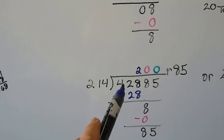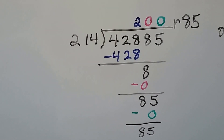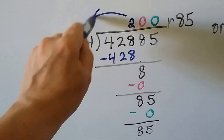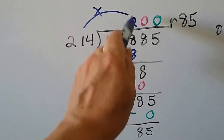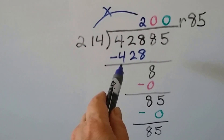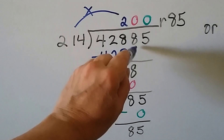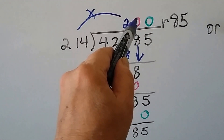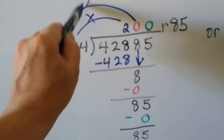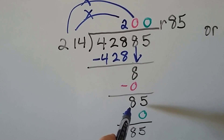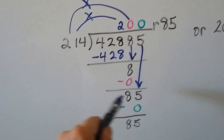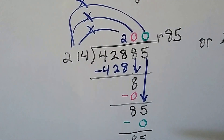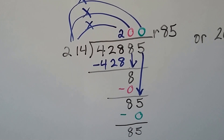Now instead of 4,288, we've got 42,885 with a three-digit divisor. We know 214 times 2 gives us 428. It can't fit into the 4, can't fit into the 42, so we write our 2 above the 428. We subtract and get 0. The 8 comes down — 214 can't fit into 8, so we put a 0 above the 8. 214 times 0 is 0; subtract and get 8. Now the 5 comes down. 214 can't fit into 85, so another 0 above the 5. We subtract and have a remainder of 85.